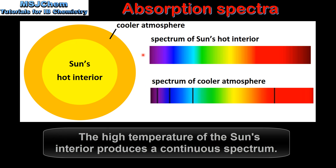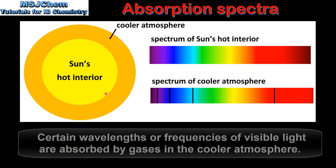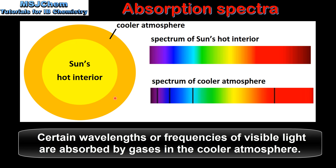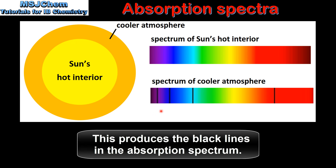Due to the high temperature of the sun's interior, we get a continuous spectrum which shows all the frequencies or wavelengths of visible light. As the light passes through the cooler atmosphere, certain frequencies or wavelengths of light are absorbed by gases such as hydrogen or helium. This produces the black lines in the absorption spectrum.